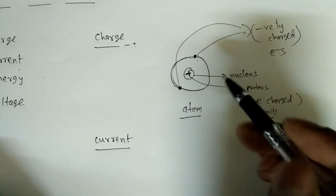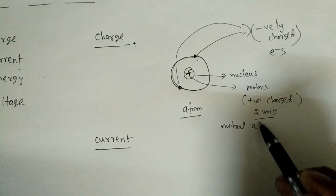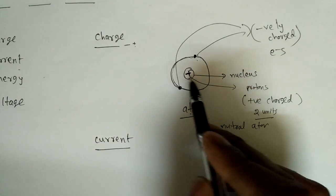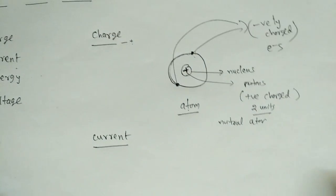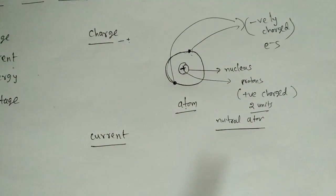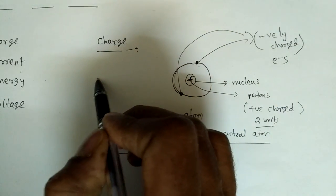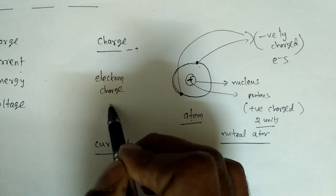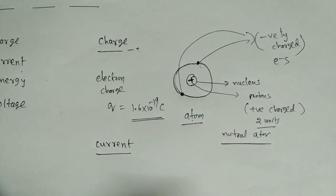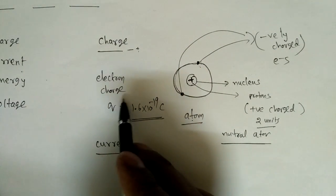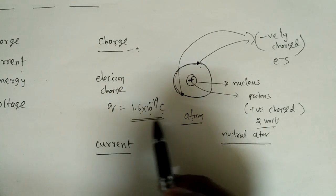That negative charge is due to the negatively charged electrons in the outer orbits, called valence electrons. In a neutral atom, the positive charge in the nucleus equals the negatively charged valence electrons. The electron charge is denoted by q, and its value is 1.6 × 10⁻¹⁹ coulombs — we have to remember this value and will use it in circuit analysis.